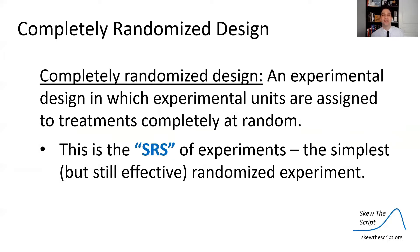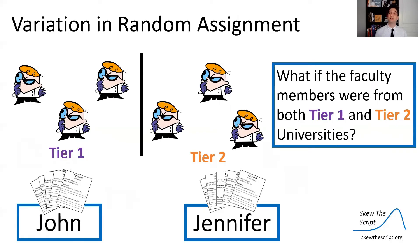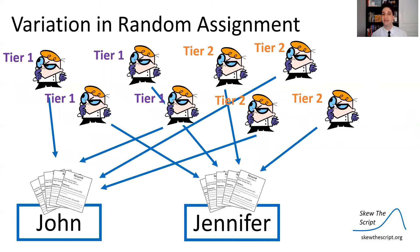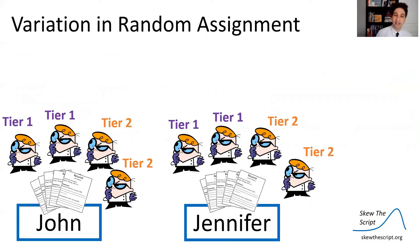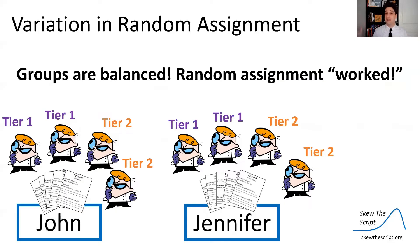This is an example of a completely randomized design — an experiment in which experimental units are assigned to treatments completely at random. This is the Simple Random Sample equivalent for experiments. But there's a certain variation that might exist that we want to account for. For example, what if faculty members were from both tier one and tier two universities? Tier one being the most prestigious, tier two being second best. With random assignment, on average we should see balanced groups — about half of tier one getting John, half getting Jennifer — so we should control for confounding with balanced groups.